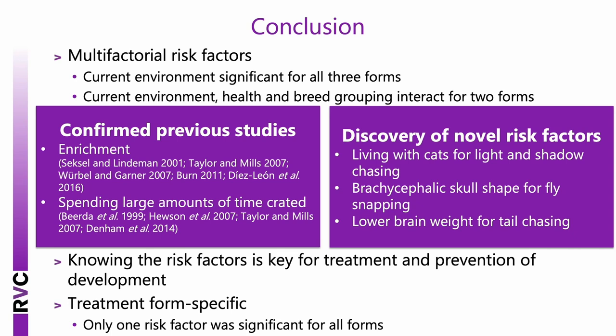Overall, our study showed that risk factors for ARBs are multifactorial and current environment is significant for all three forms. Health and breed grouping were also significant for fly snapping and tail chasing. Risk factors differ between visually mediated and locomotory ARBs, with the only consistent risk factor across all three forms being spending a prolonged time crated or contained. We confirmed previous studies on crating and enrichment, and discovered novel risk factors: living with cats for light and shadow chasing; brachycephalic skull shape for fly snapping; and lower brain weight for tail chasing. Results suggest treatment and prevention advice should be form specific.